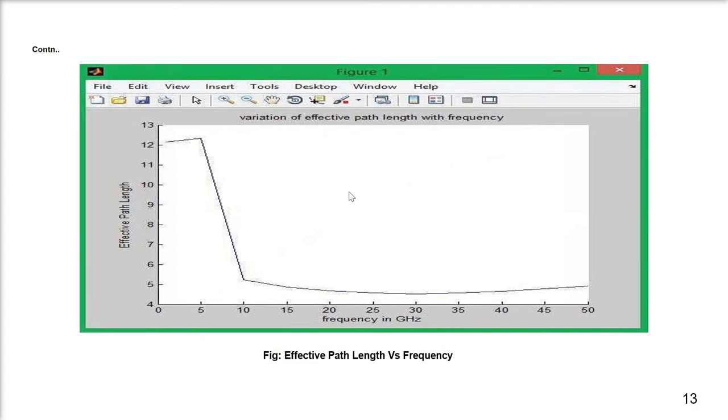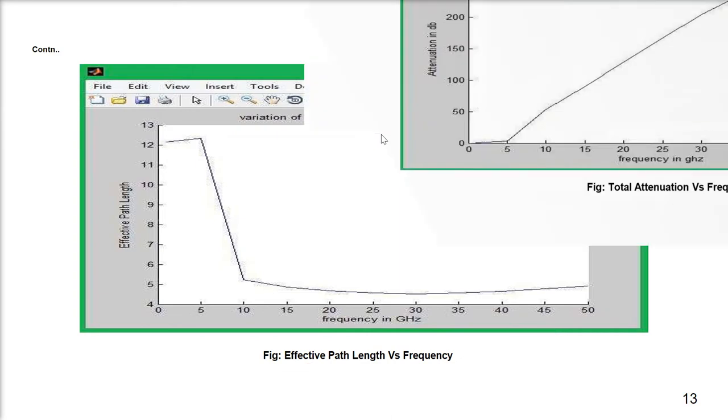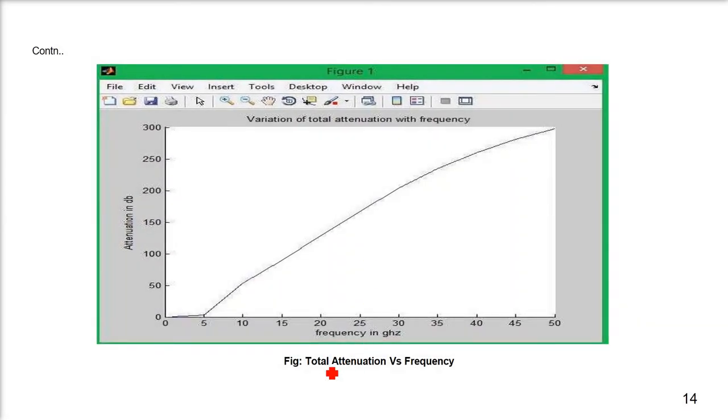We have effective path length versus frequency, so effective path length decreases as frequency increases. That is why we go with effective path length. Finally, total attenuation in dB per kilometer versus frequency. If you see, if you go from this point to this point, it is almost still, but it goes like this as we go up the frequency.